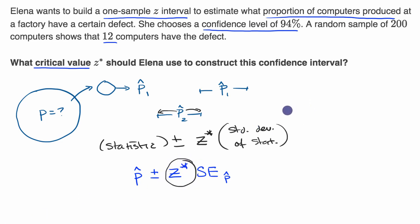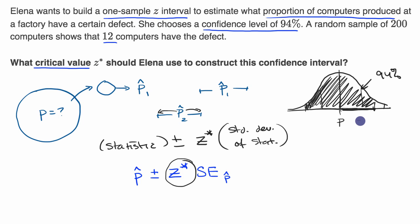What we need to think about is, assuming the sampling distribution is roughly normal, and this is the mean which would be our true population parameter, how many standard deviations above and below the mean in order to capture 94% of the probability, 94% of the area. This distance, this number of standard deviations, that is z star.